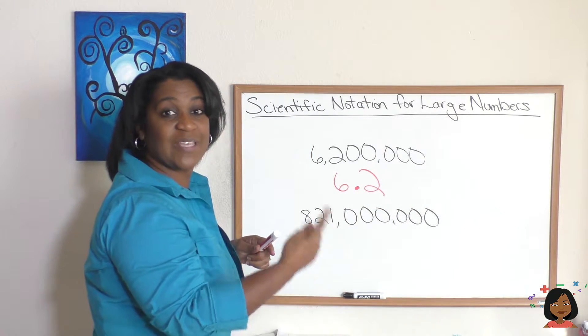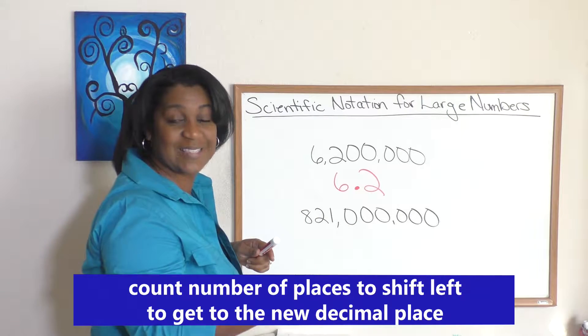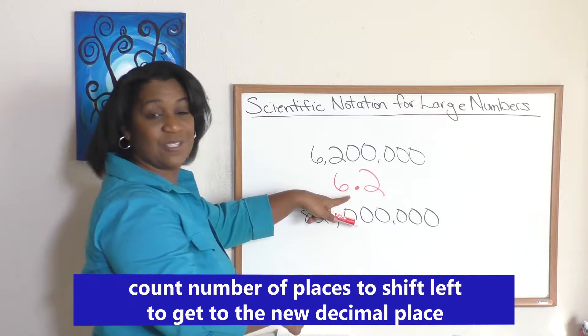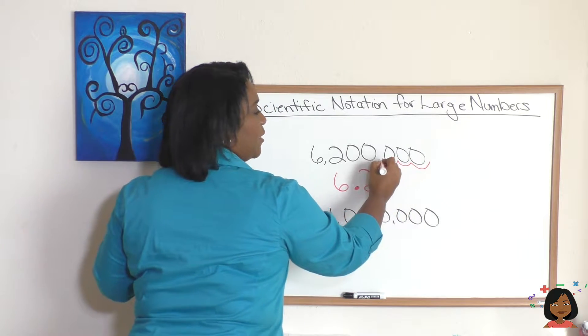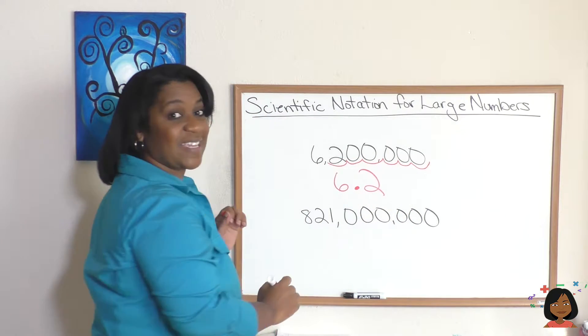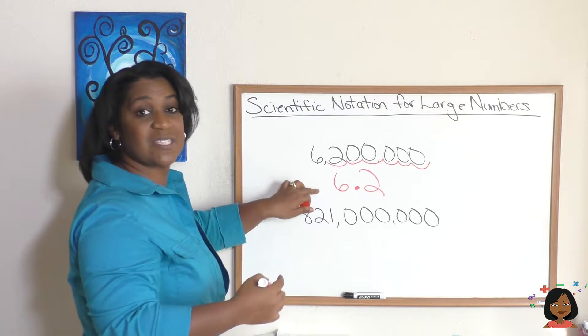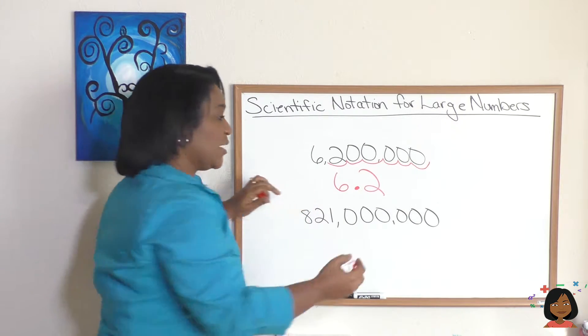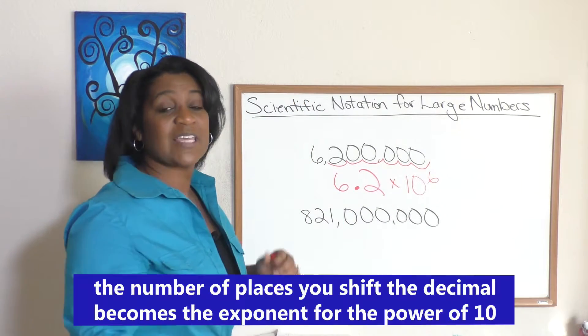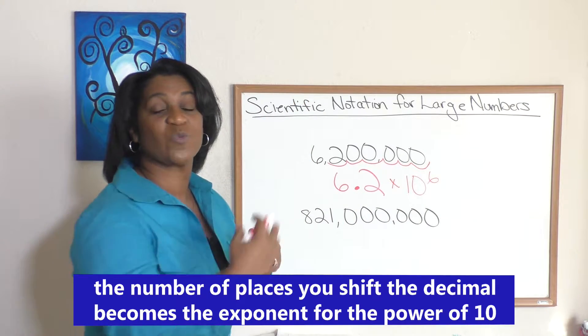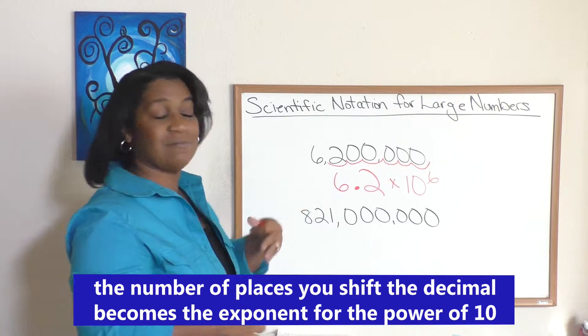So what I have to do is count the number of decimal places I want to get to this new decimal point. Here we go. So we're going to go one, two, three, four, five, and six, which means we're going to write 6.2 times 10 to the sixth power, because that's the number of decimal places we shifted. And there you go.